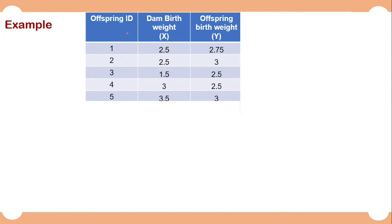Now we will see an example on estimation of heritability using regression of offspring on one parent. I have data on the birth weights of different sheep. The first column shows offspring ID. The second column shows the dam's birth weight, denoted as x since it is the independent variable. The third column shows the offspring birth weight, denoted as y since offspring birth weight is dependent on the dam's birth weight.